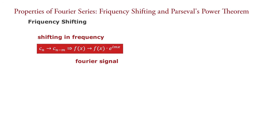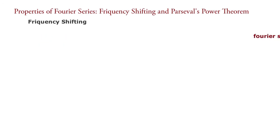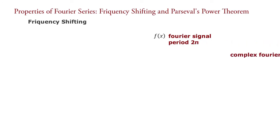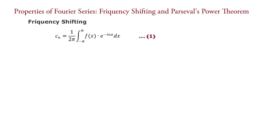For explanation, consider a Fourier signal f(x) with period 2π and its corresponding complex Fourier coefficients C_n, in which C_n equals 1 upon 2π times the integral from minus π to π of f(x) times e raised to minus i·n·x dx — equation 1.